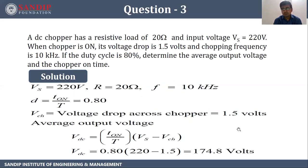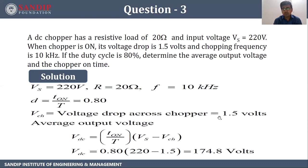Question 3. A DC chopper has a resistive load of 20 ohm and input voltage of 220 volts. When the chopper is on, its voltage drop is 1.5 volts and chopping frequency is 10 kilohertz. If the duty cycle is 80 percent, determine the average output voltage and chopper on time. So Vs is 220 volts, R is 20 ohm, F is 10 kilohertz, duty cycle D is T_on upon T, that is 0.8, and chopper voltage drop Vch is 1.5 volts.